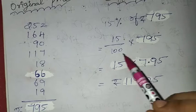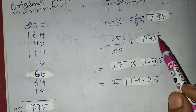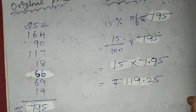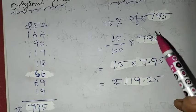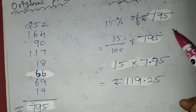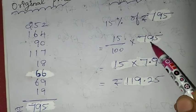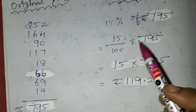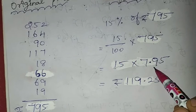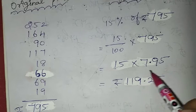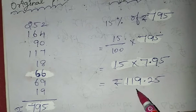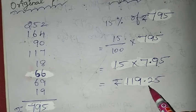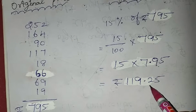Calculating 15/100 × 795: we simplify and multiply to get Rs. 119.25 as the discount amount.